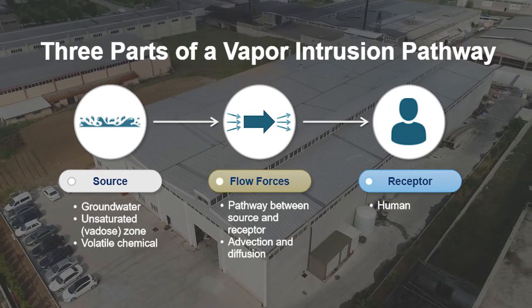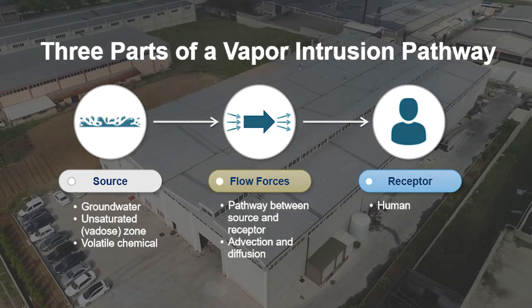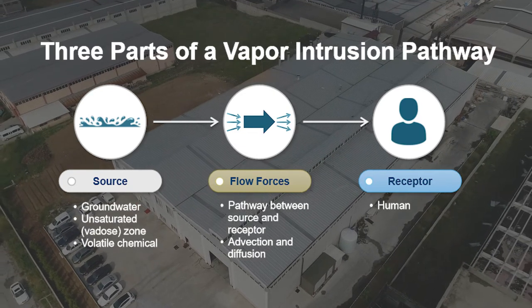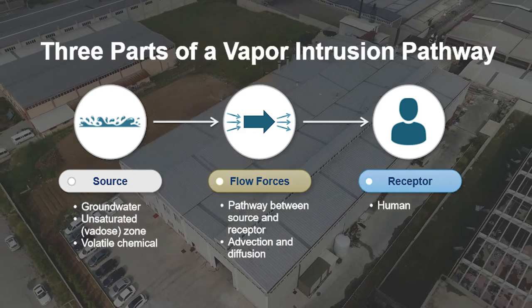We could sample shallow groundwaters by putting in a shallow well and sampling groundwater at the top of the water table. We can also do near-slab soil gas sampling.